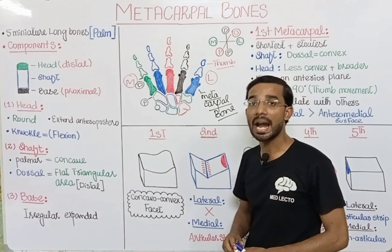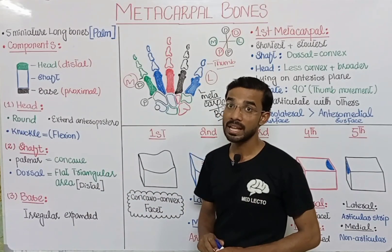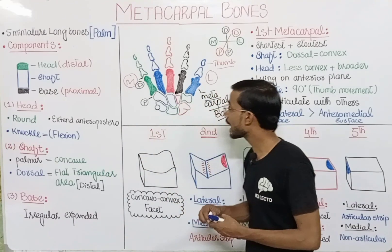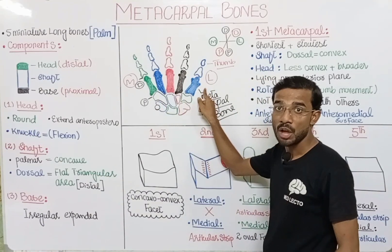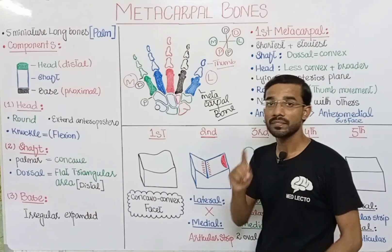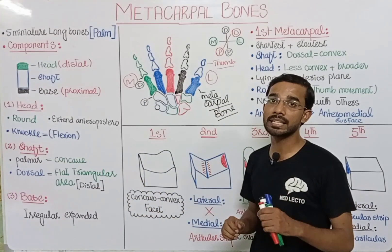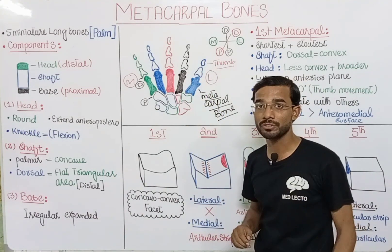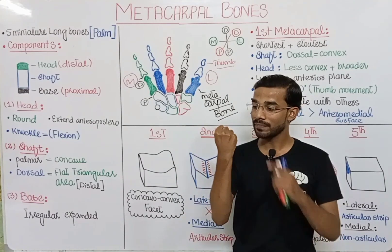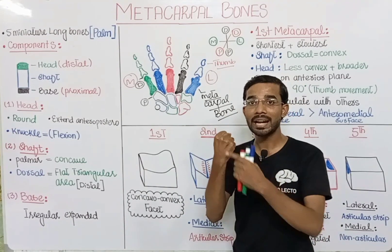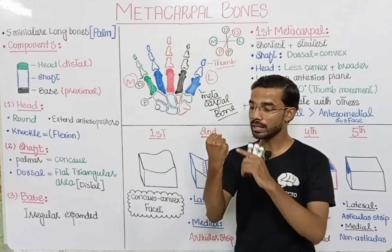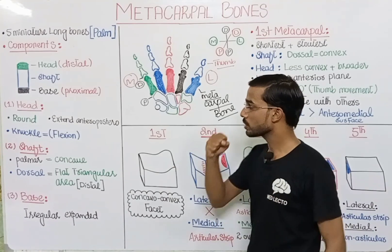The head of the metacarpal bone is round, and it extends anteroposteriorly more than laterally — meaning it extends more toward the palmar side and the dorsal side. When you flex your fingers, you see the formation of the knuckle. When you make a fist, the knuckles become prominent on your hand.